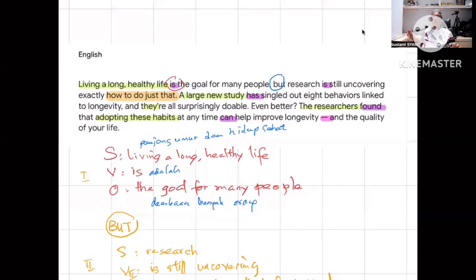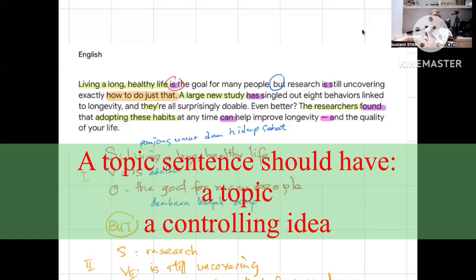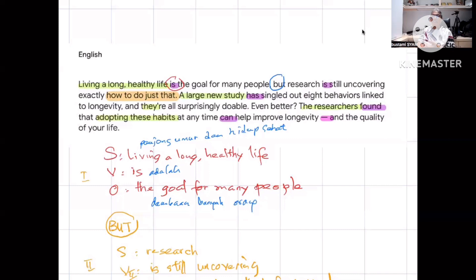Is this a topic sentence? Let's see. A topic sentence has a topic and controlling ideas. I don't see what the topic is here. It's just a general statement. We won't find about dreams in the following paragraphs. Therefore, we look at the next sentence.